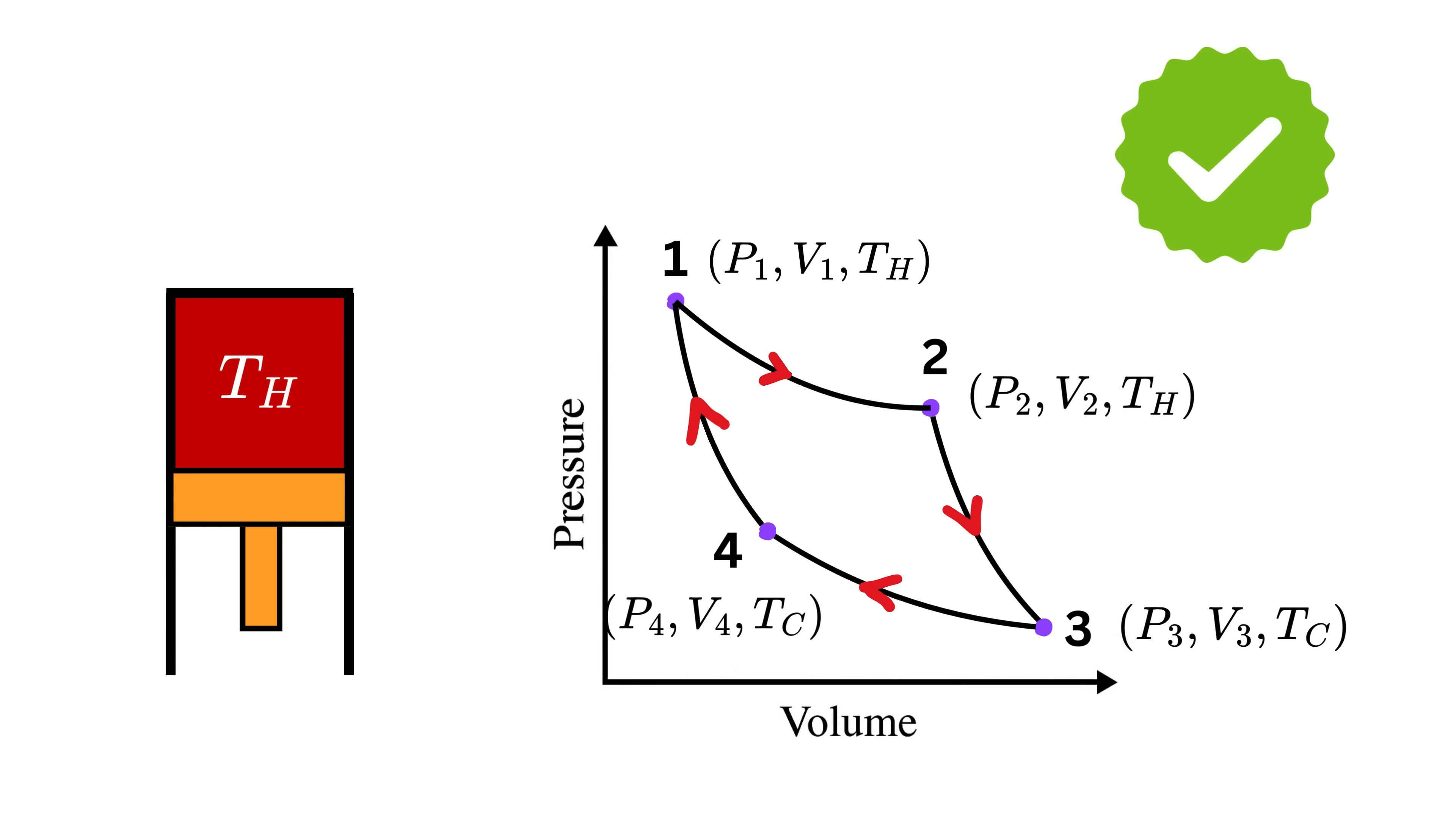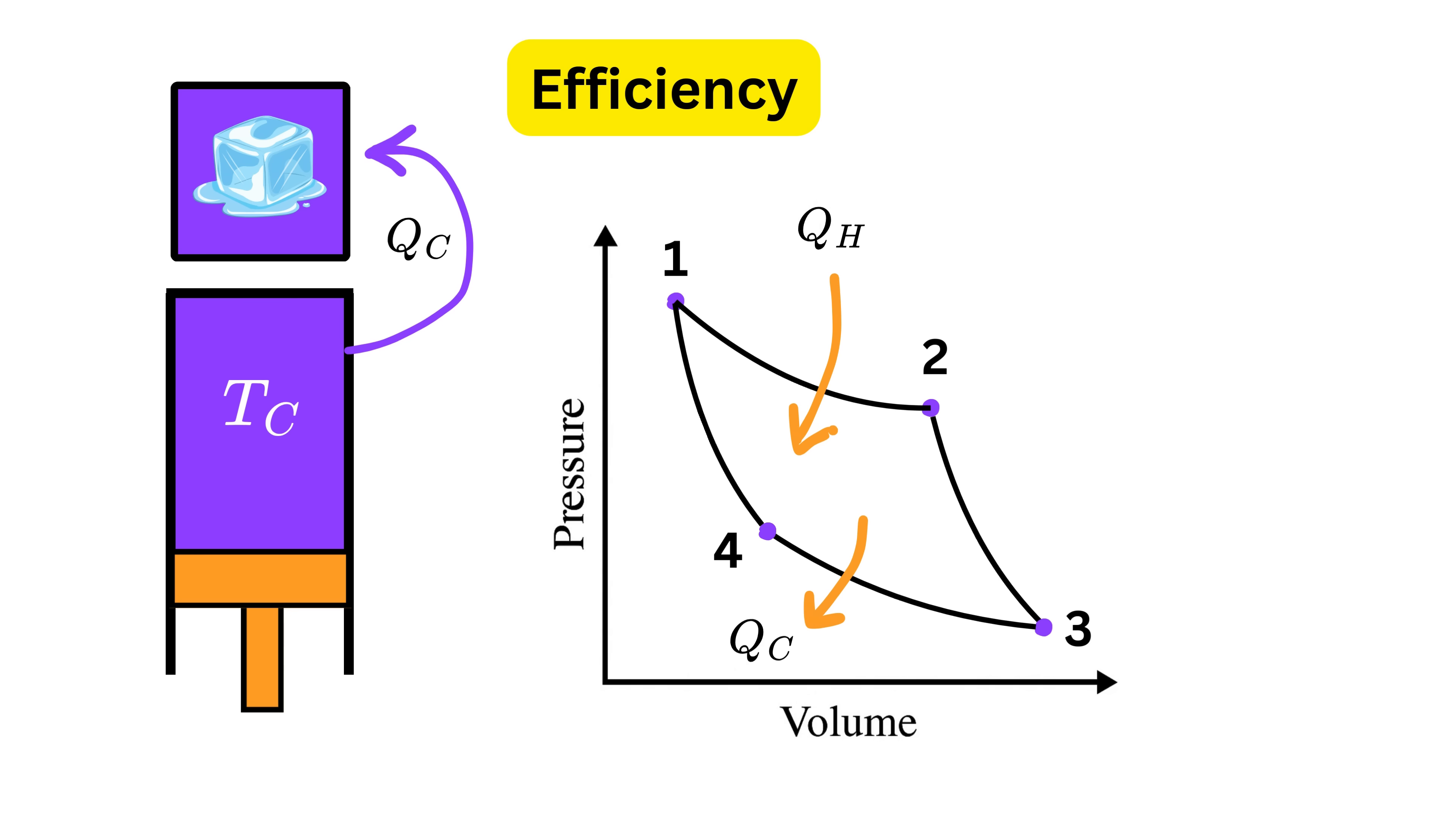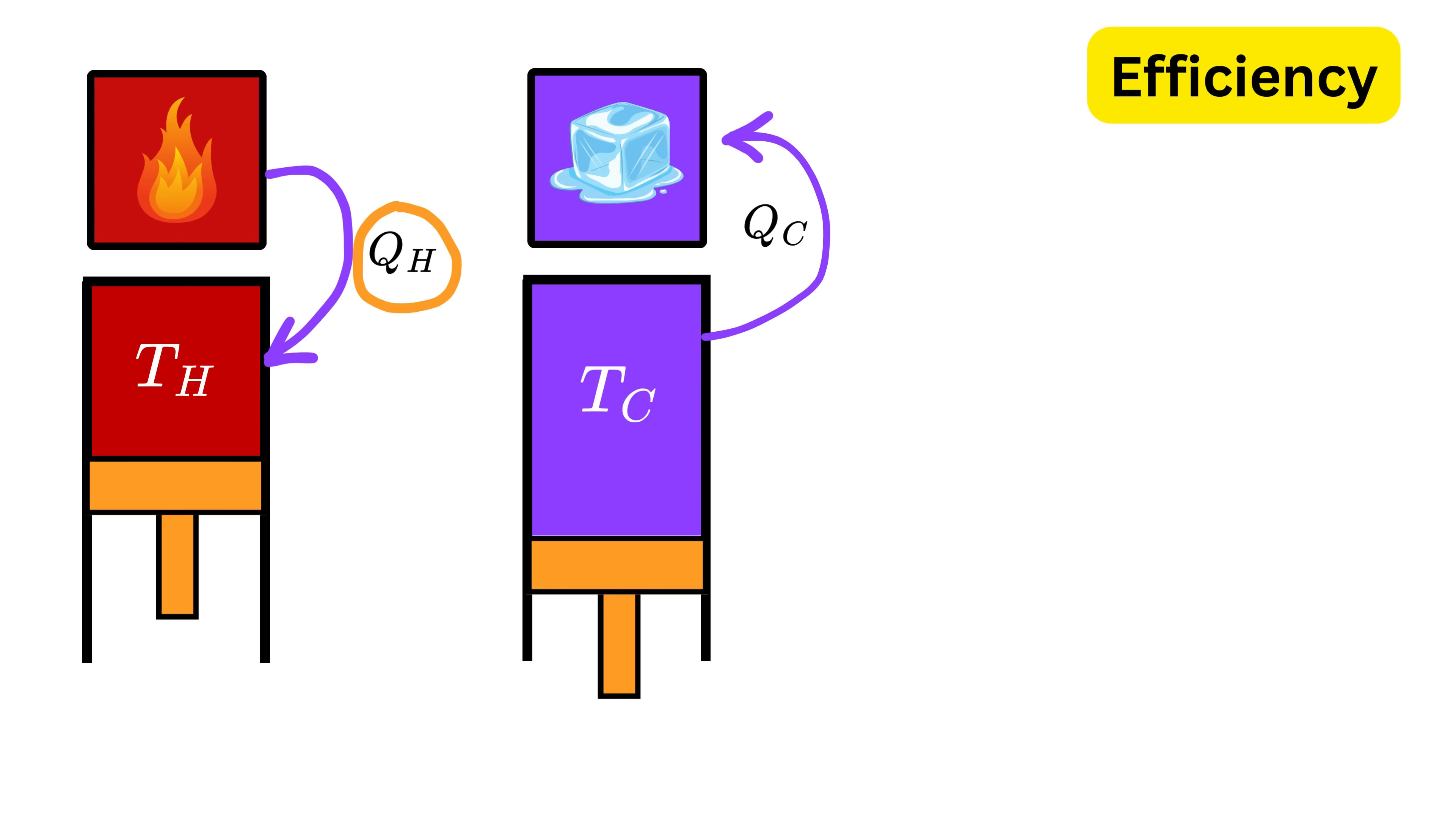Awesome! Now at last we will talk about the efficiency of this Carnot cycle. In the first step, the gas absorbs some heat, which we will call Q_h, from the hot reservoir and later releases some heat Q_c to the cold reservoir. Right?